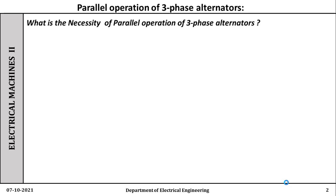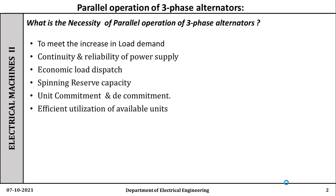These are three-phase alternators. In actual practice, in thermal stations or hydroelectric power stations or generating stations, a number of alternators are running in parallel, so that the addition or deletion — switching off one or two alternators — doesn't make any difference on the infinite bus.